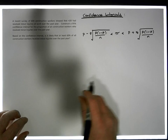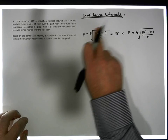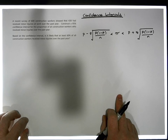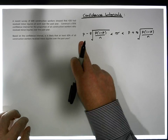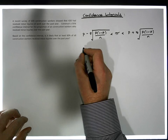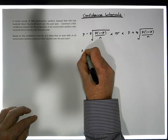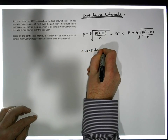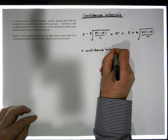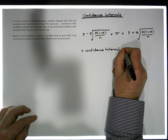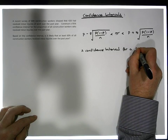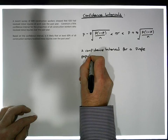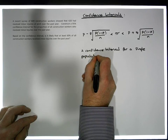So maybe I'll just write that down. We actually have a particular formula that allows us to construct that confidence interval. It looks quite complicated, but let's write down the name of this particular question: a confidence interval for a single population proportion.